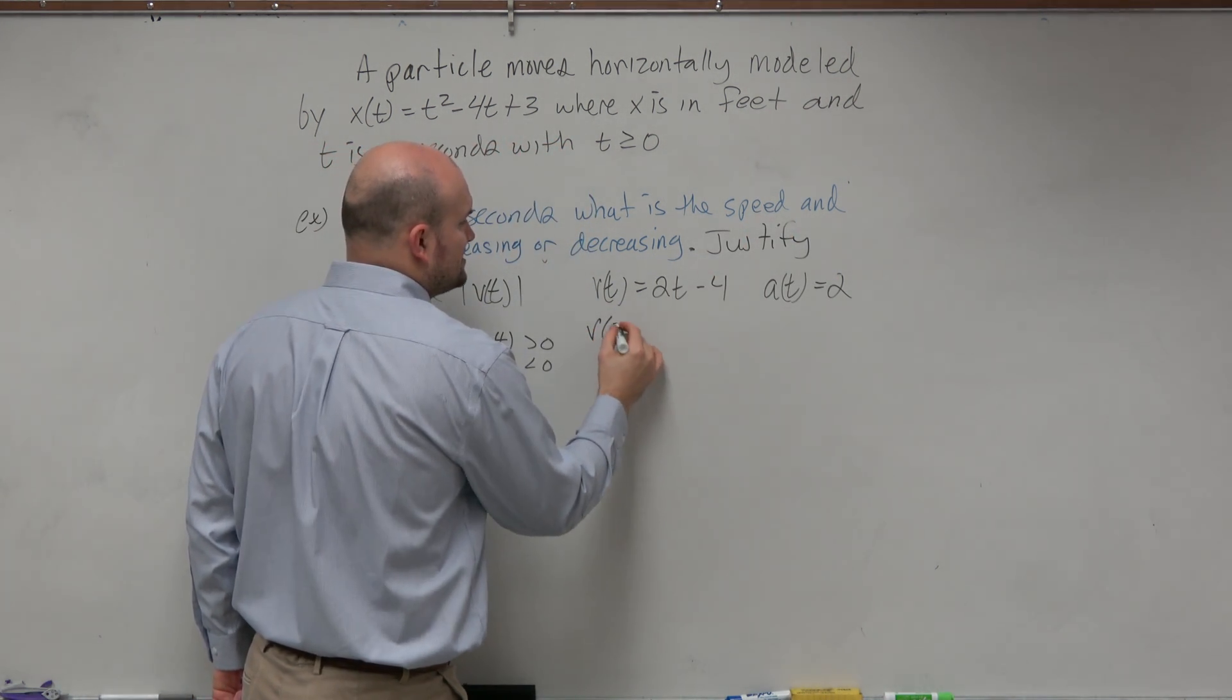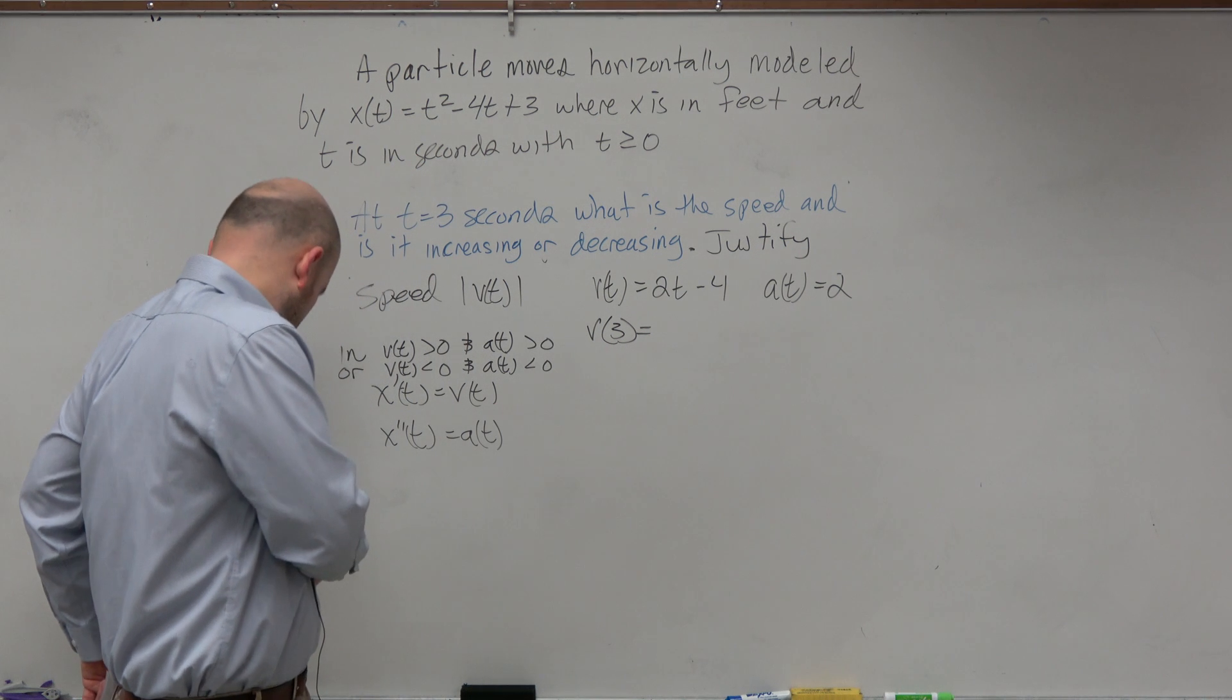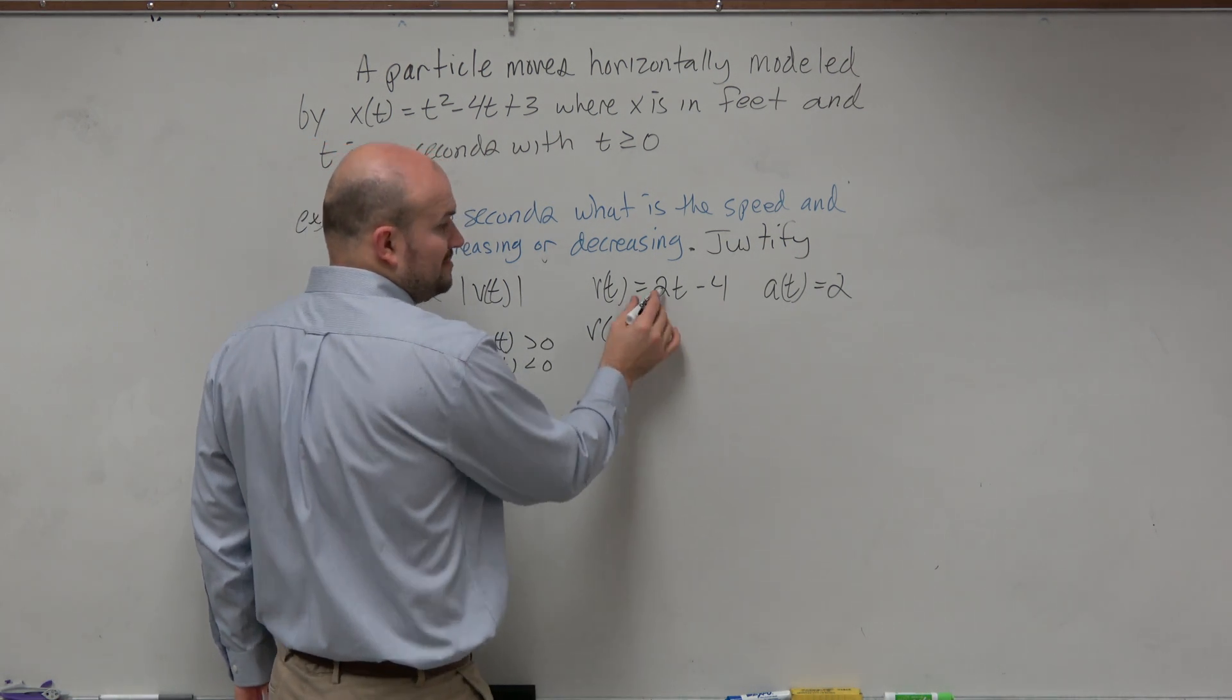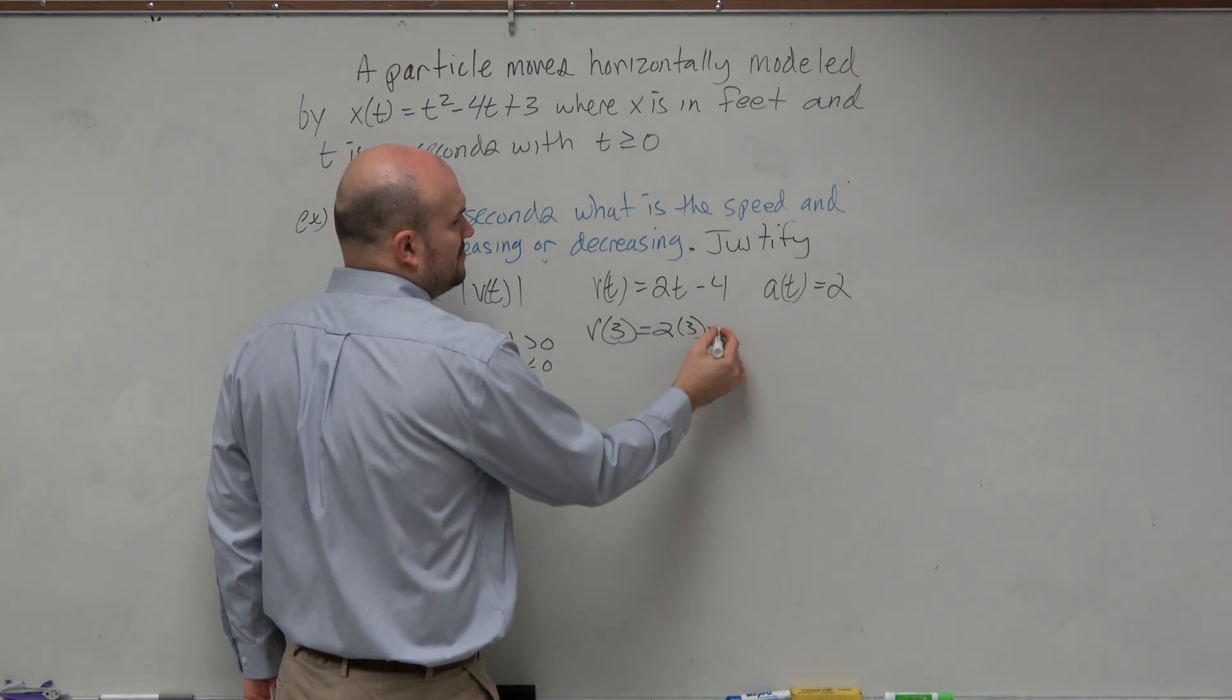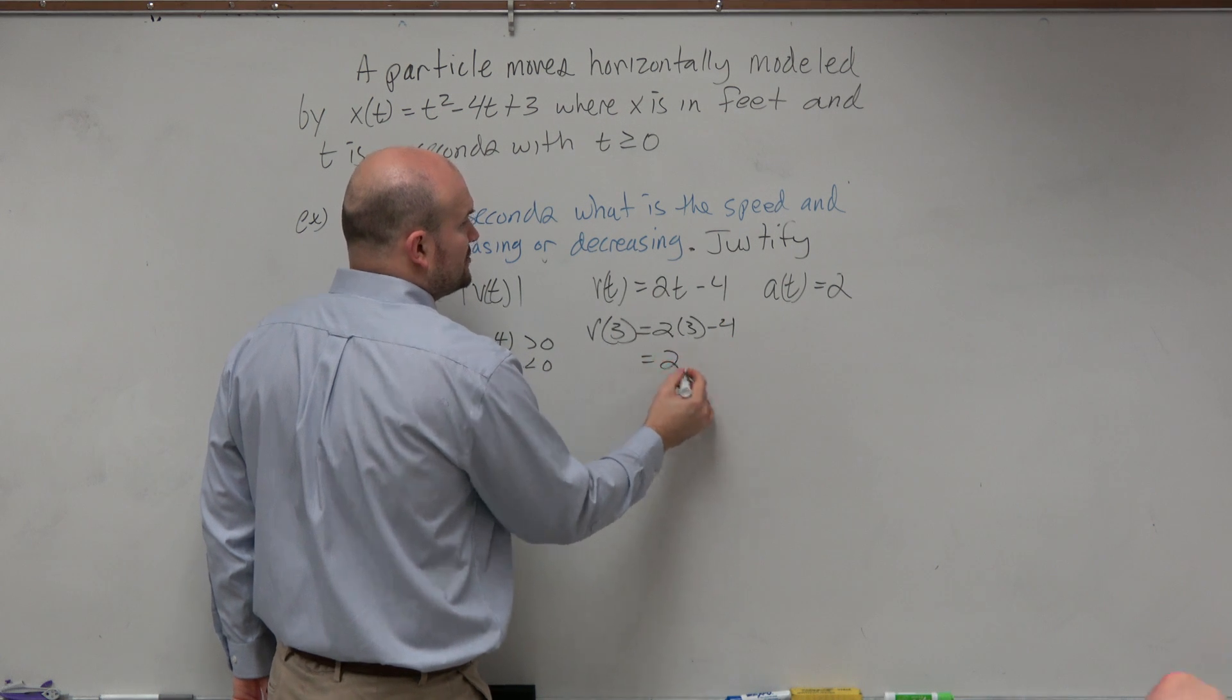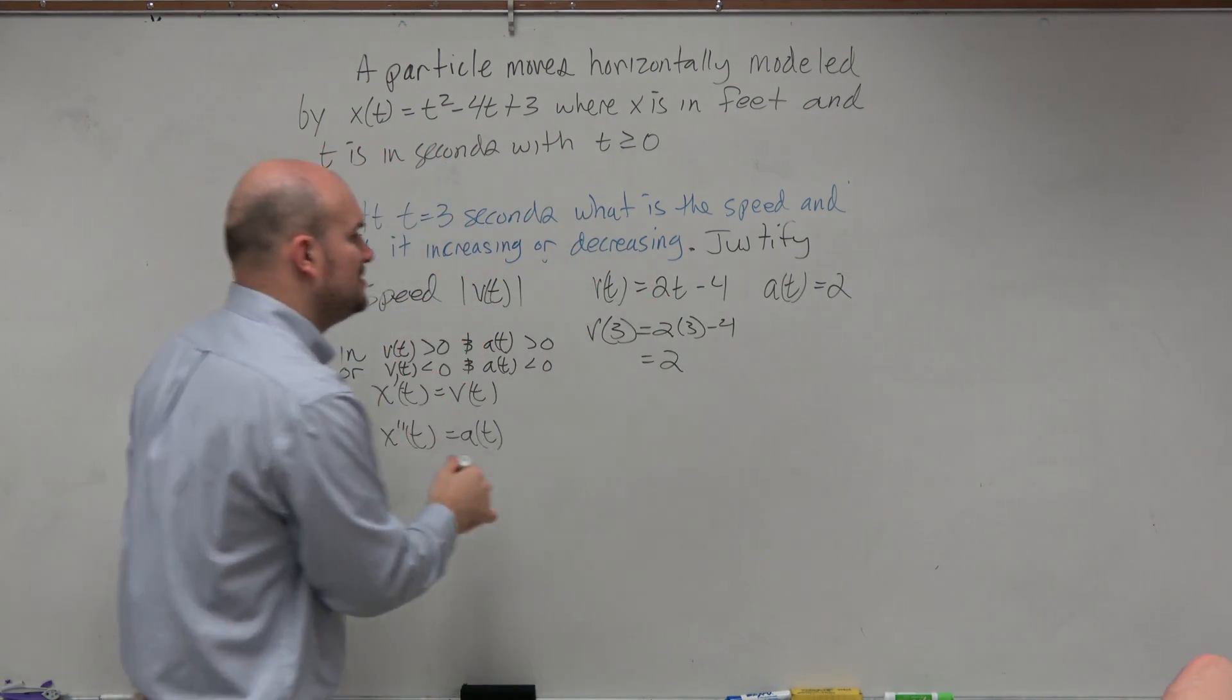So let's figure out what v sub 3 is. v sub 3 is going to be 2 times 3 minus 4, which is equal to 2. And then this is feet per second.